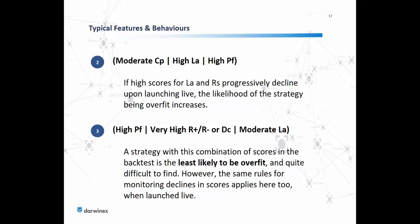A strategy with this third combination of scores in the backtest is the least likely to be overfit and therefore quite difficult to find. However, you should apply the same rules for monitoring declines in scores as you did to the other two combinations after the Darwin is launched live. Always keep an eye on the evolution of these particular investment attributes, as they can be the fine line between a strategy being overfit or not.